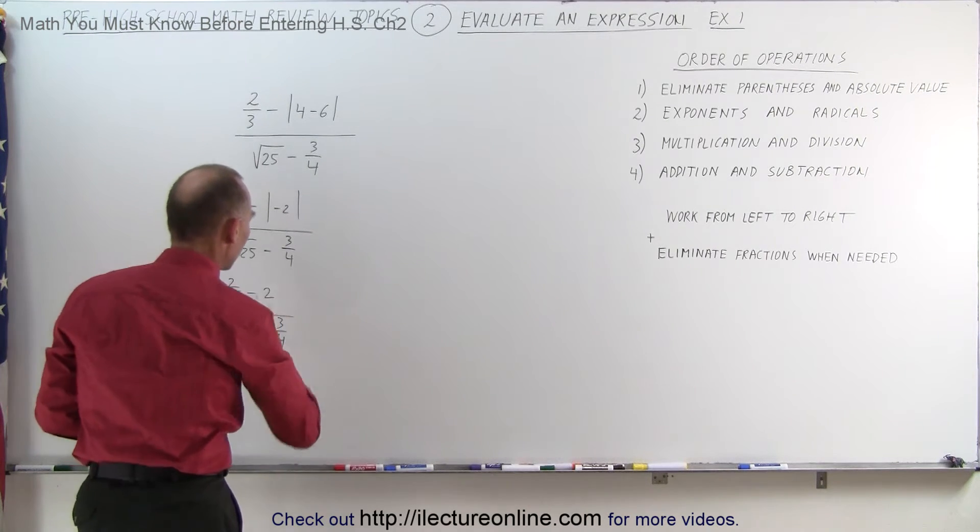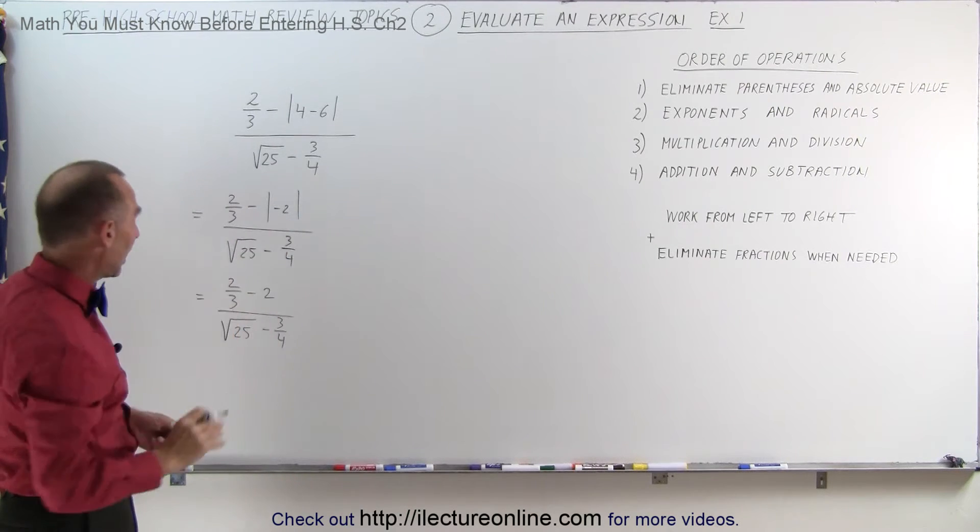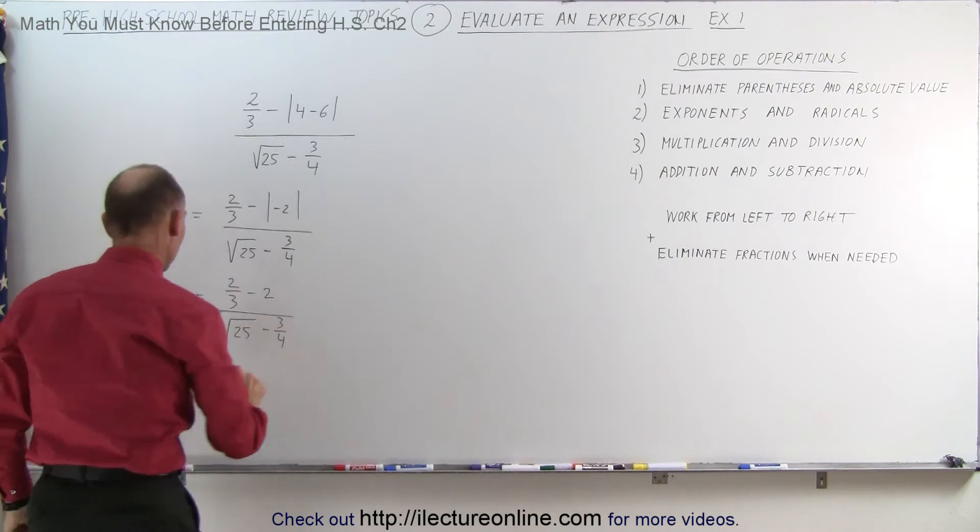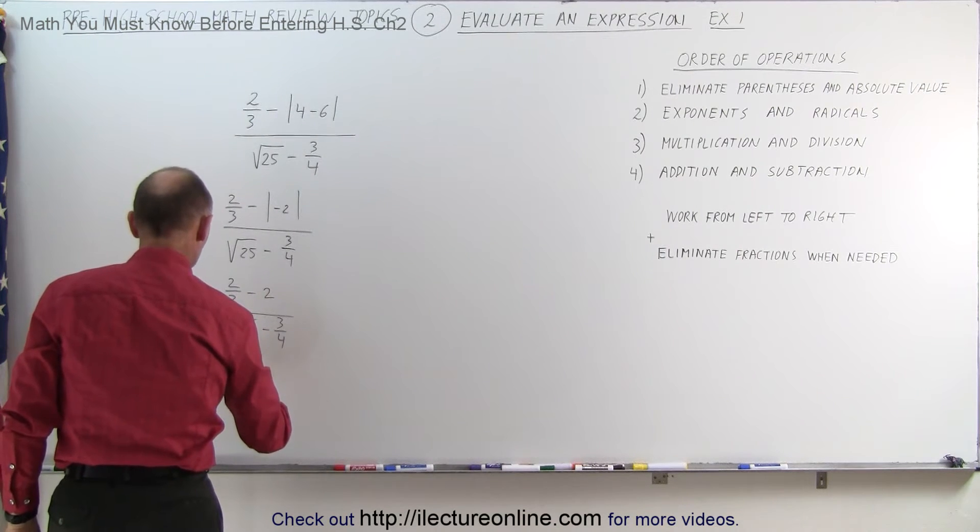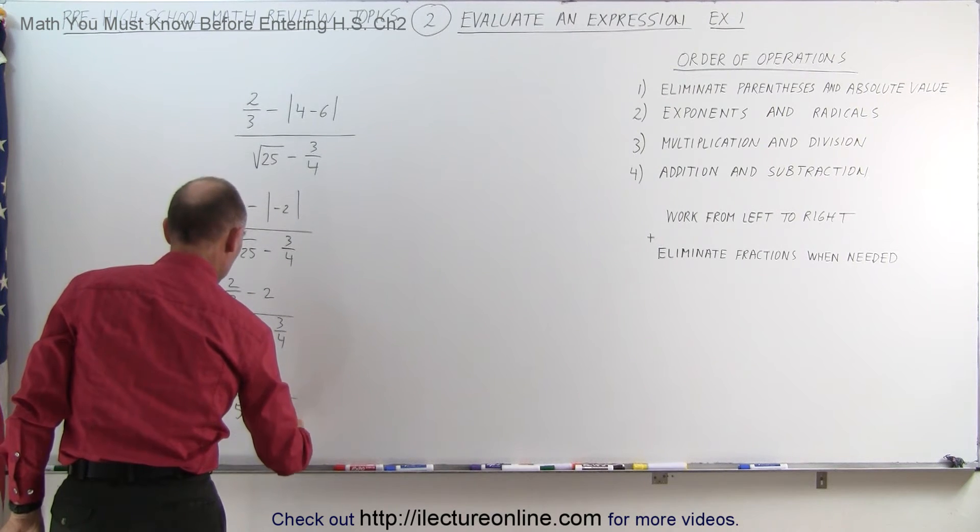So now we got rid of that absolute value sign. Next we should get rid of exponents and radicals. We have a radical here, so let's take the square root of 25, which is equal to 5. This becomes equal to 2/3 minus 2 divided by 5 minus 3/4.